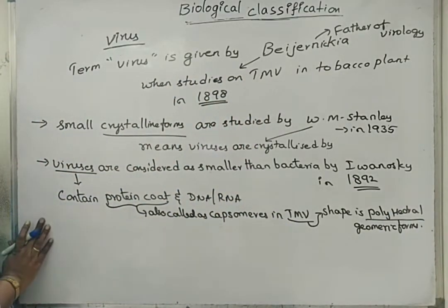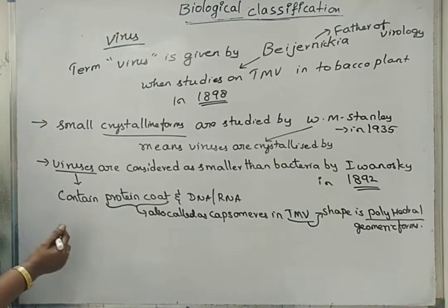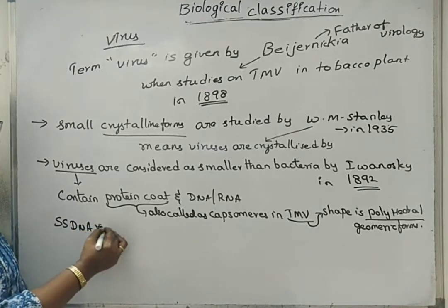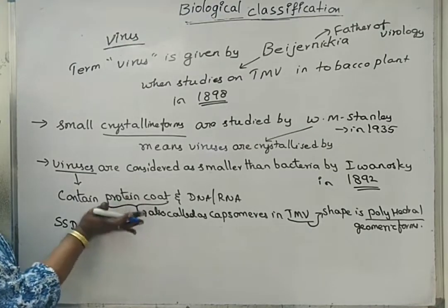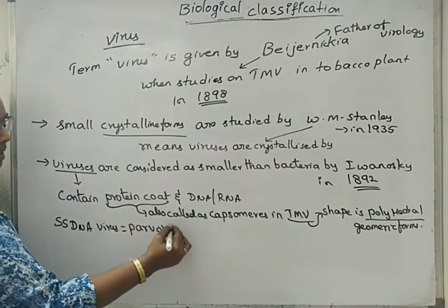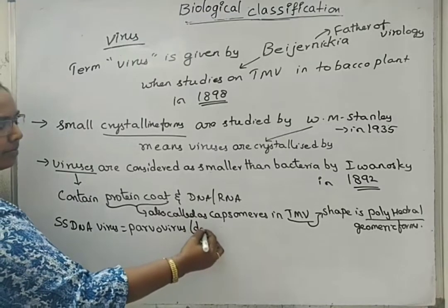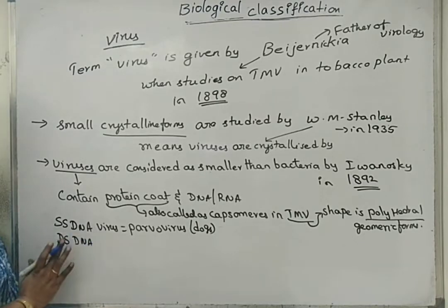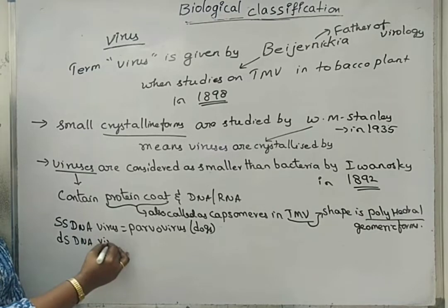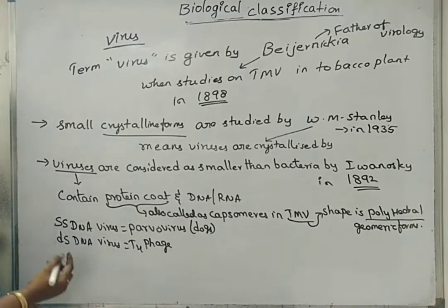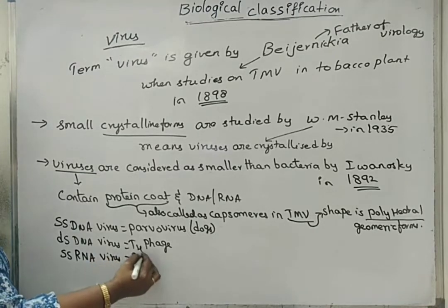Now we will see which virus has what type of genetic material. Single-stranded DNA-containing virus — example is Parvo virus, which infects dogs. Double-stranded DNA virus — example is T4 phage, which infects E. coli. Single-stranded RNA-containing virus — example is Polio virus.